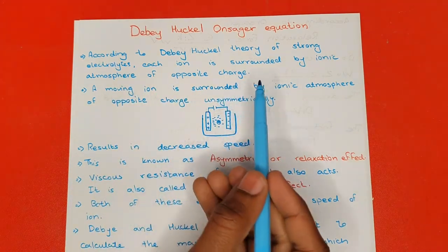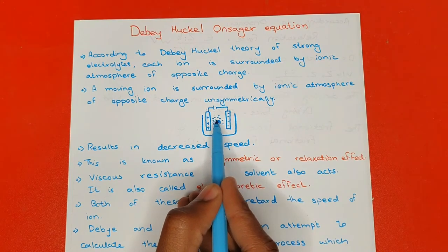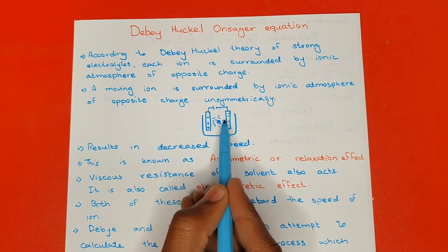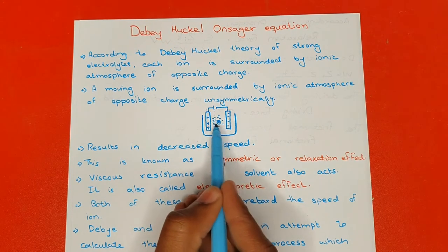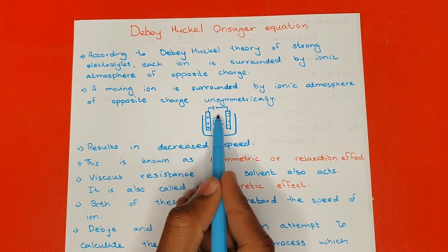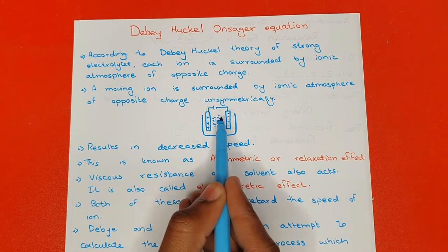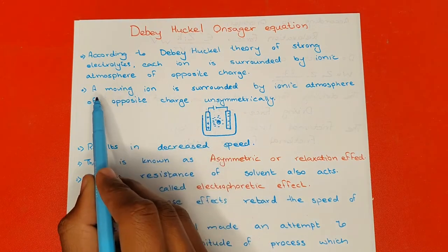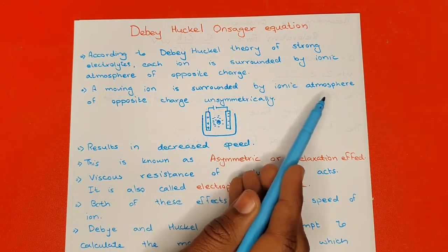So if I have a positive charge at the center, it is surrounded by negative charges. As you can see in this beaker, I have a positive charge at the center and it is surrounded by negative charges around it. The next thing is that a moving ion is surrounded by an ionic atmosphere of opposite charge unsymmetrically.